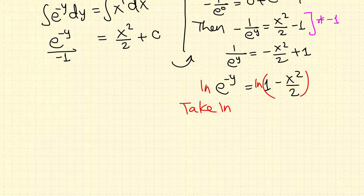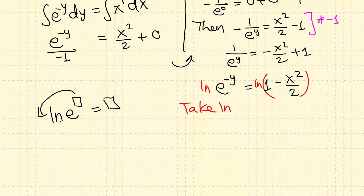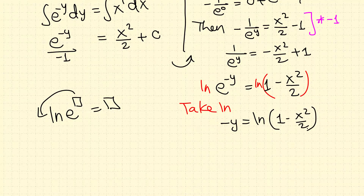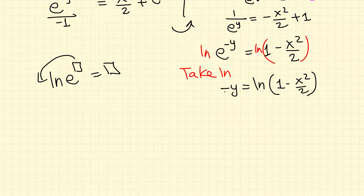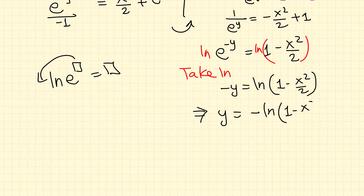Taking the natural log of e to the negative y, the negative y jumps to the front because the natural log of e raised to anything brings the exponent forward and ln(e) equals 1. So negative y equals the natural log of that expression. Multiplying both sides by negative 1 gives y equals negative ln of (1 minus x squared over 2). That is the final answer.